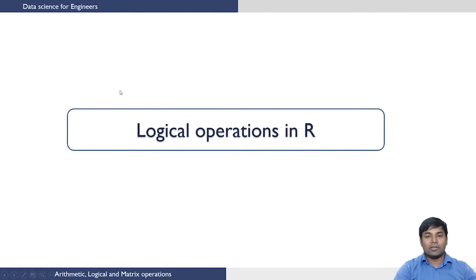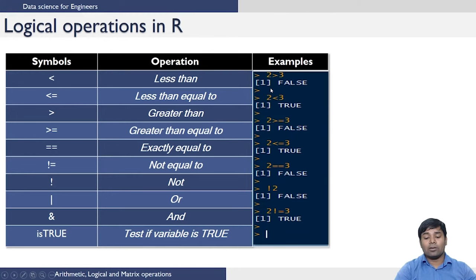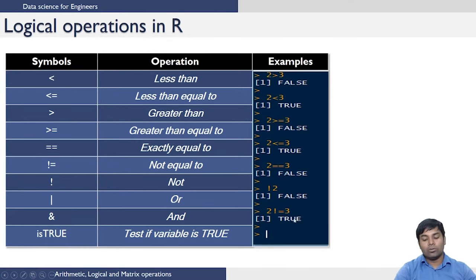Next we move on to the logical operations in R. We have standard logical operations such as less than, less than or equal to, greater than, greater than or equal to, equal to and so on. For example, if you ask 2 is greater than 3 it will return false, because the statement 2 greater than 3 is not true. Similarly if you say 2 is equal to 3 it will also say false because 2 is not equal to 3. When you execute the command 2 not equal to 3, it will give you the answer true because 2 is indeed not equal to 3.